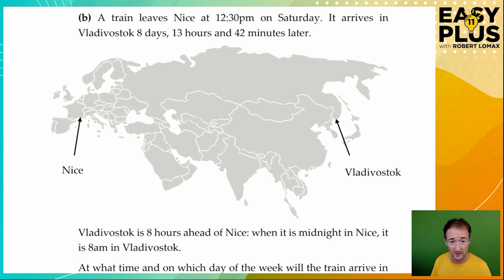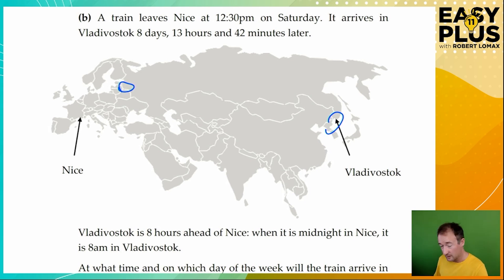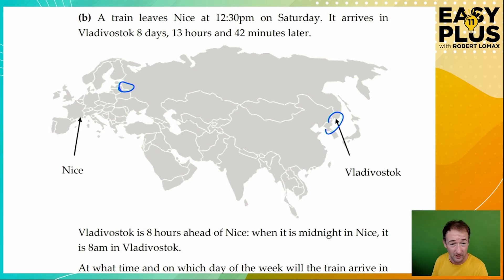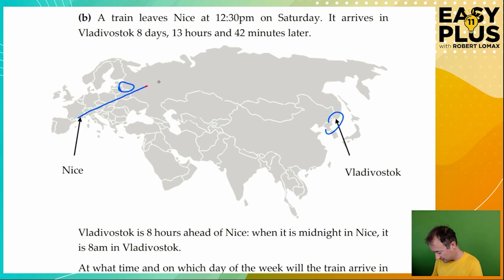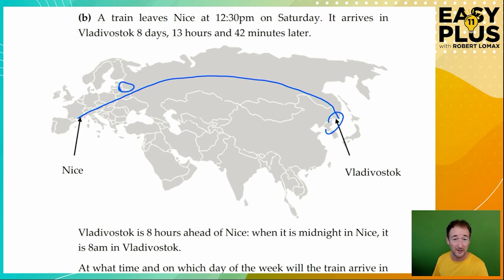Here we've got a nice map to look at. Vladivostok is over in Russia, and Russia also extends all the way over to St. Petersburg — you can get a sense of quite how enormous this country is. Vladivostok is further east than India, further east than China, virtually level with Japan. Russia is a country of extraordinary size. So we've got this enormous journey all the way across, and it isn't surprising that it takes more than a week: eight days, 13 hours and 42 minutes. We've also got a time difference to deal with here.